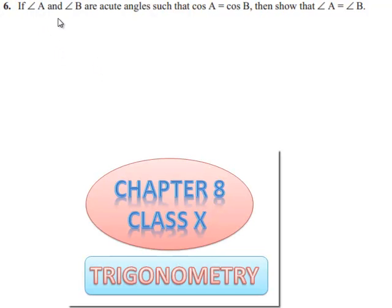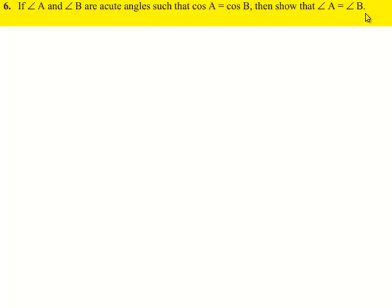Moving on to the sixth problem, if angle A and angle B are acute angles such that cos A is equal to cos B, then show that angle A is equal to angle B.